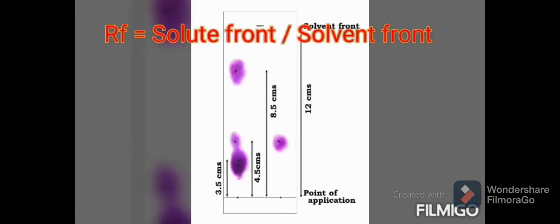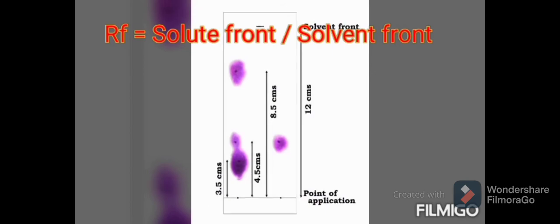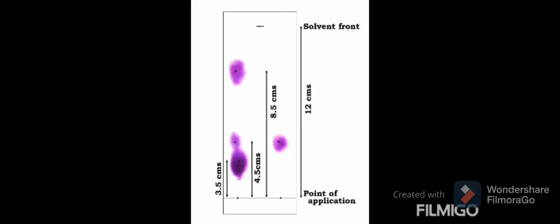Identification of amino acids is done by the retardation factor or retention ratio, symbol Rf, which is the ratio of the distance moved by the solute to the distance moved by the solvent front. For example, the Rf value for the test spot is 4.5 ÷ 12 = 0.375. The value always falls below 1.0. If two solutes share the same Rf in one solvent, a different solvent can be used to obtain separate spots.